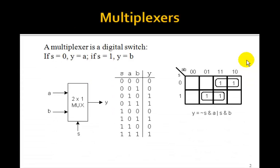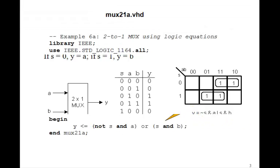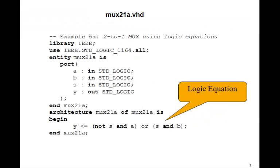Let's begin by recalling the equation for 2 to 1 MUX from the previous example. Remember, this was the logic equation, and so we can just write a VHDL program. Here's the entity, inputs A, B, and the control signal S, and the output Y. And here's the logic equation, just not S and A or S and B. So that would do it.